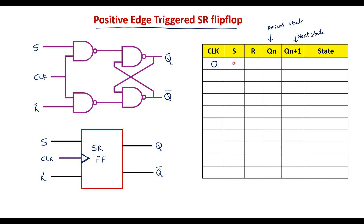If clock input is 0, irrespective of S and R (don't care), if Qn is 0 then Qn+1 is also 0. Similarly, if the clock input is 0 and the present state is 1, the next state will also be 1. This indicates there is no change in the state of the flip-flop — we call it the no-change state.